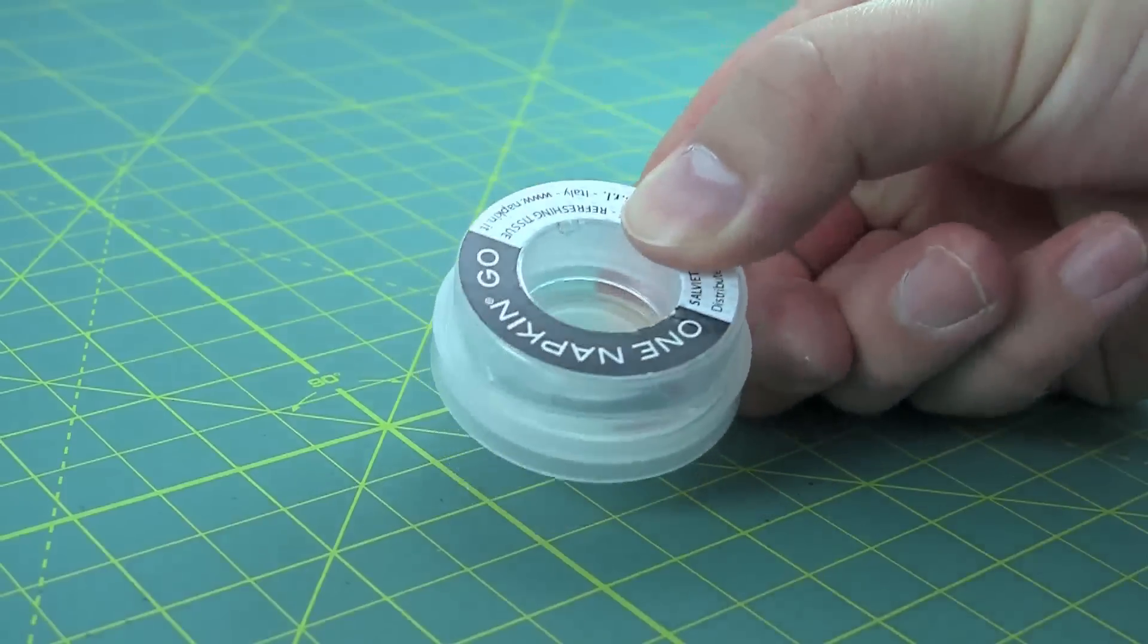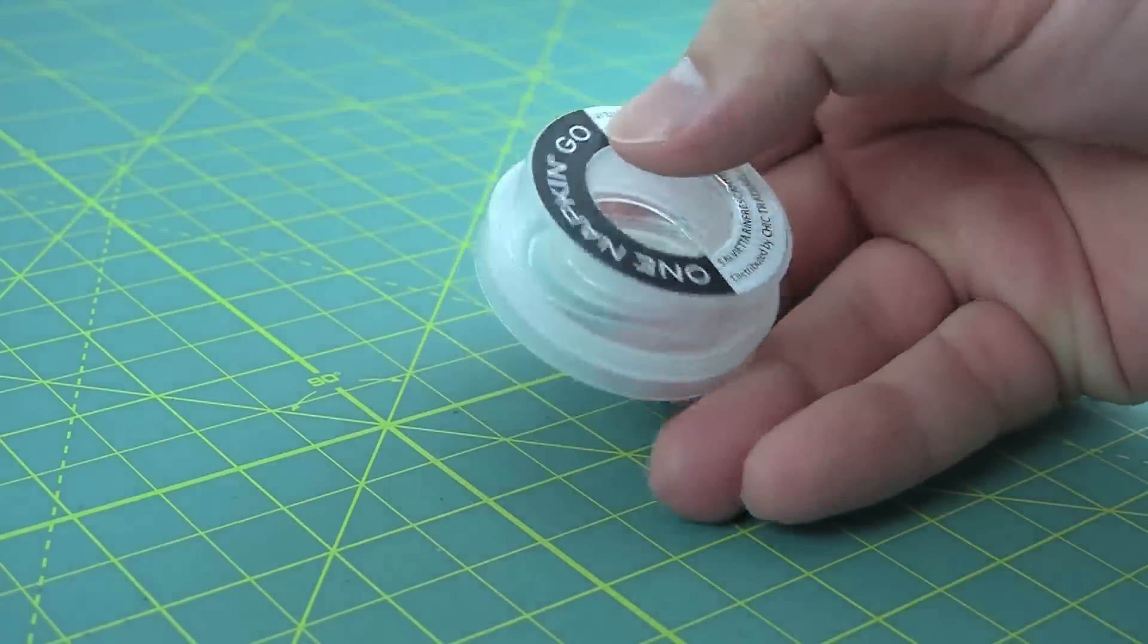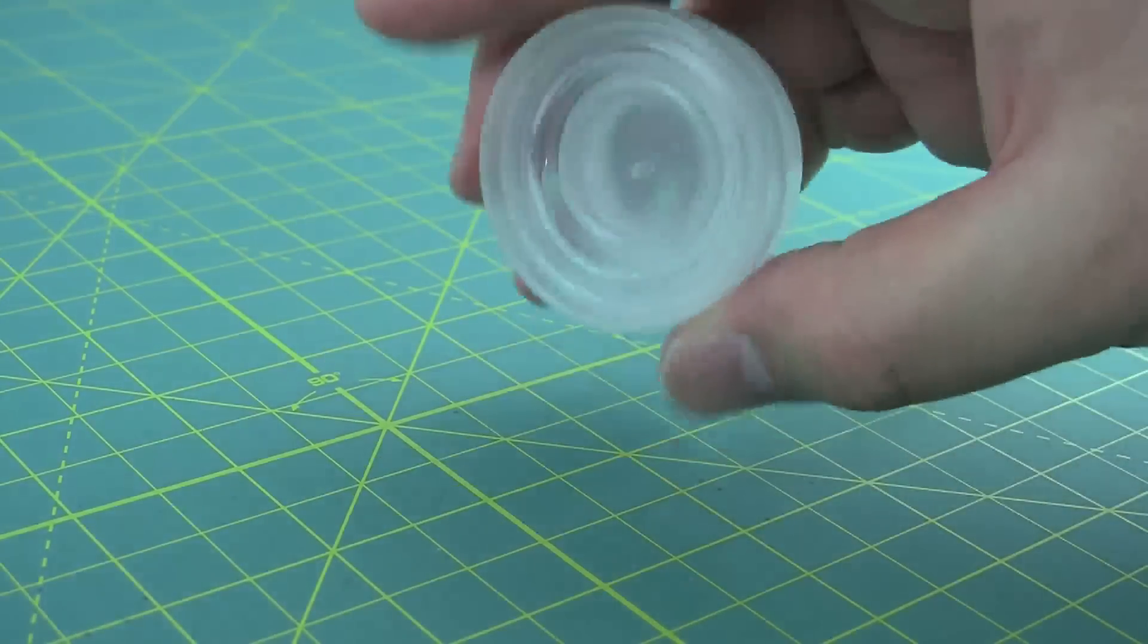And there it is. You see that little slit right there? Close it. There you go. That's how the water gets out of there, or stays in there. Anyway, that's the instant napkin to go.